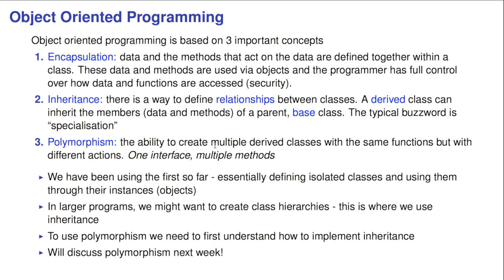Inheritance, which says there's a way to define relationship between classes. A derived class can inherit the members of both data and methods of a parent-based class. The typical buzzword here is specialization, which we'll discuss towards the end of this lecture. The final one, which we won't be able to reach today completely, is polymorphism, the idea to create multiple derived classes with the same functions but with different actions. And here we usually say one interface, multiple methods.